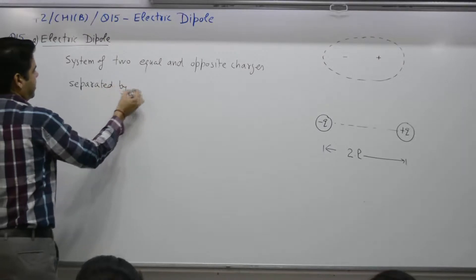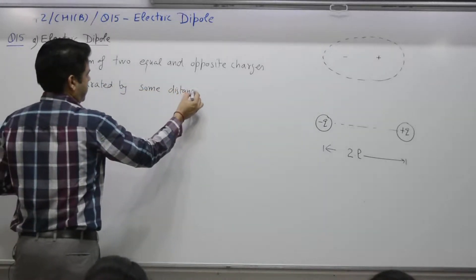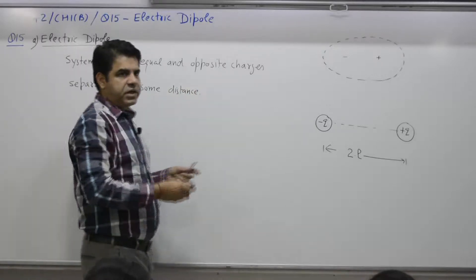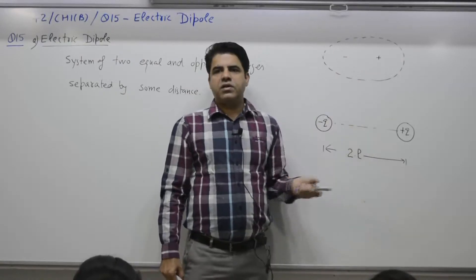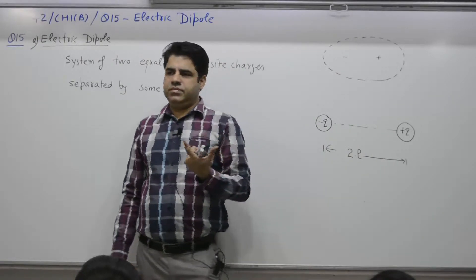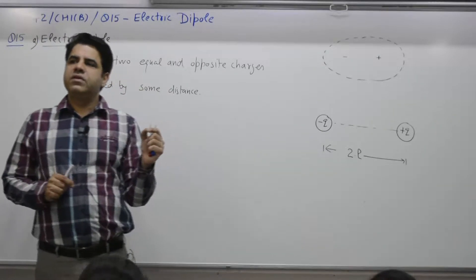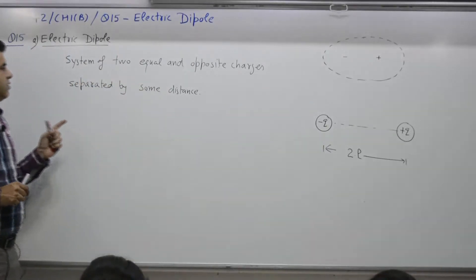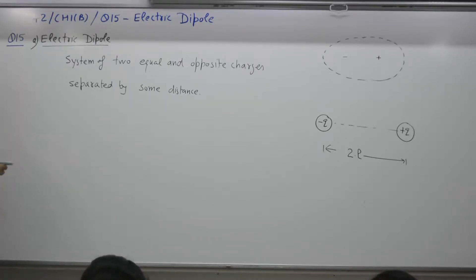In chemistry applications, the distance between charges in a molecule is of the order of a few angstroms. The distance between the positive and negative charges is called the length of the dipole. In this case, the length of the dipole is 2l.